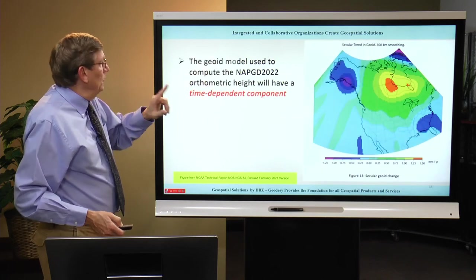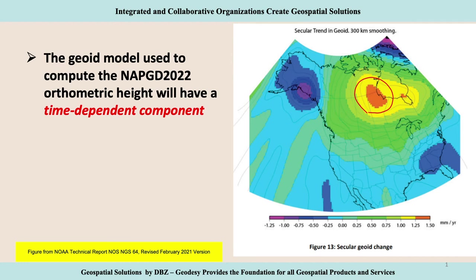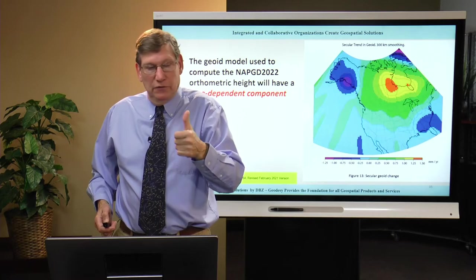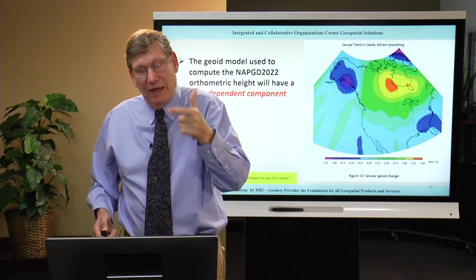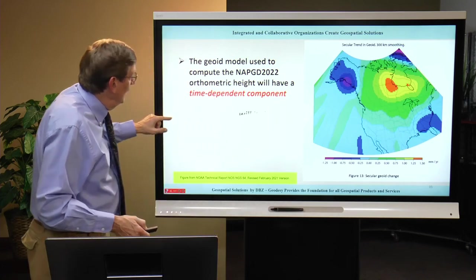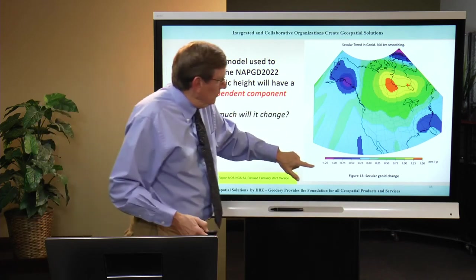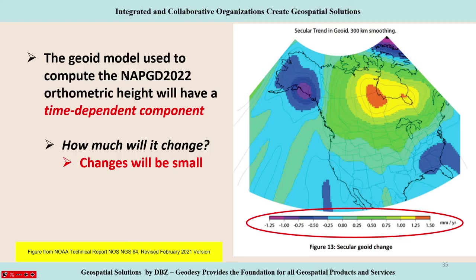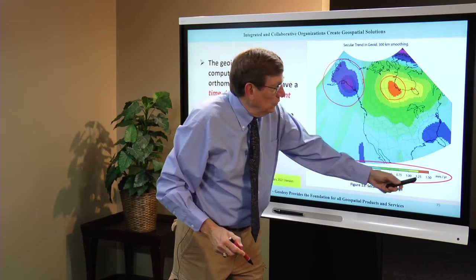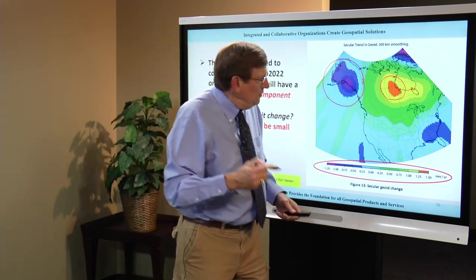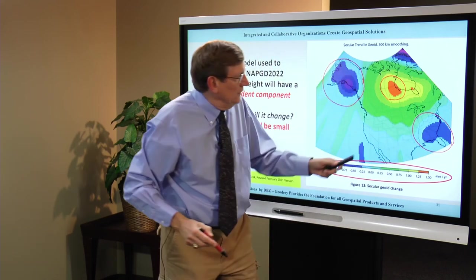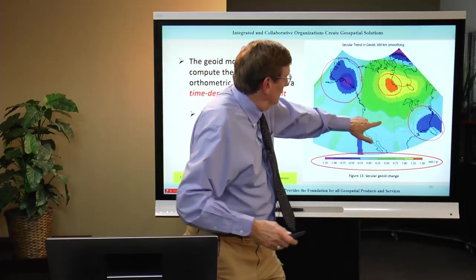I want to point out that NAPGD-2022 is going to have a time-dependent component, just like the horizontal reference frames NATREF and PATREF. Looking at this diagram, you can see changes on the order of 1.25 to 1.5 millimeters per year in various locations. Up in certain areas and in the Hudson Bay area — known for glacial isostatic adjustment — you see values above the millimeter-per-year range. These are significant changes over large areas. The time-dependent component means the vertical datum will change over time and needs to be tracked.